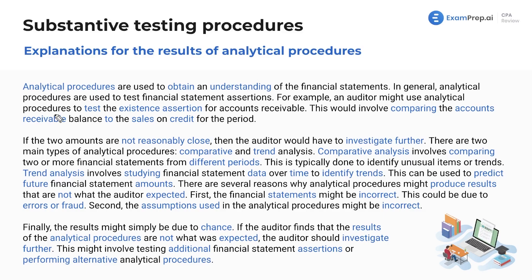Make sure you have sufficient explanations for the results of analytical procedures. These procedures are used to obtain an understanding of the financial statements in general and to test financial statement assertions. For example, an auditor might use analytical procedures to test the existence assertion for accounts receivable by comparing the accounts receivable balance to the sales and credit for the period. Think about your journal entries — analytical procedures involve comparing debits and credits. A debit to AR of $10,000 and a credit to revenue of $10,000 makes sense because when you debit AR, you credit revenue.